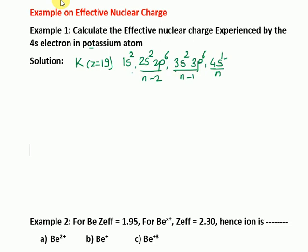There is no contribution to the screening constant from the n shell itself when calculating Z_eff for that electron. The formula is Z_eff = Z − σ, where Z = 19. Sigma is calculated as the sum of contributions toward the screening constant from each shell. There is only one electron in the n shell, and we calculate Z_eff for that electron.